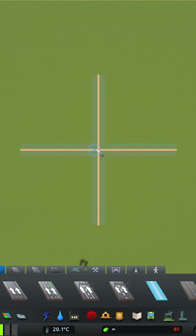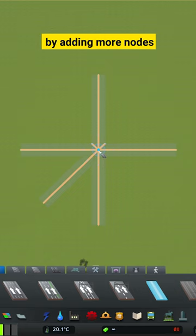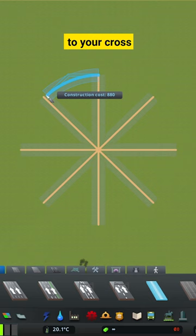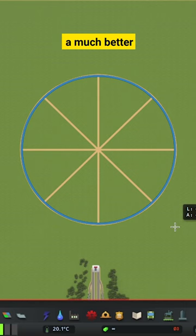You can easily fix this by adding more nodes when creating your circle. Simply add four diagonal roads to your cross of the same length as the others and connect everything with the freeform road tool and you'll have a much better looking circle.